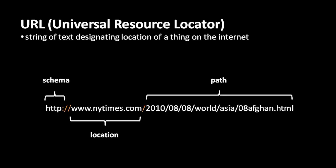The path looks a lot like a file path, but it doesn't necessarily mean we're requesting a file named 08afghan.html inside those directories. That might be the case, but it isn't necessarily — it's entirely up to the computer at the New York Times to determine what the path specifies. So you may often see URLs where the path looks like a file path, but there's no necessary connection between file paths and URLs. Lastly, notice that URLs are not allowed to have spaces.